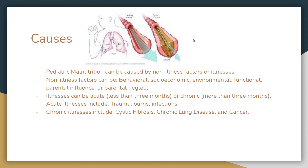Acute illnesses include trauma, burns, and infection. Chronic illnesses include cystic fibrosis, chronic lung disease, and cancer. In the picture above you can see cystic fibrosis, which can actually cause malnutrition. During cystic fibrosis, a lot of mucus builds up in the airways. This is bad for breathing but also harmful because the body cannot absorb enough nutrients due to the thick mucus.